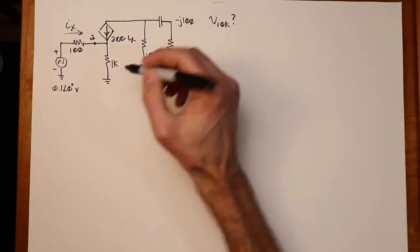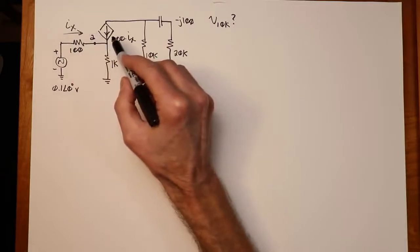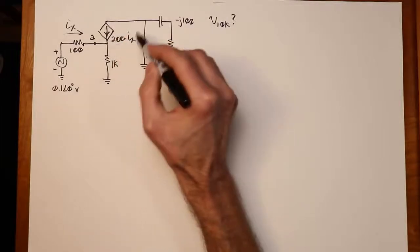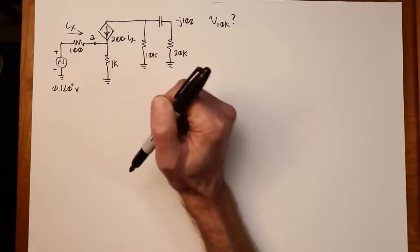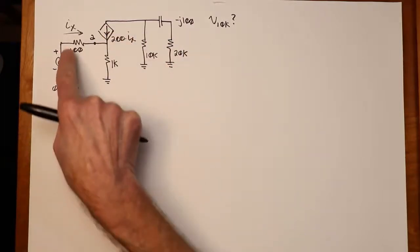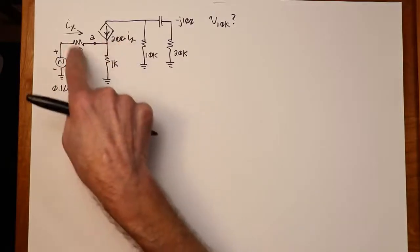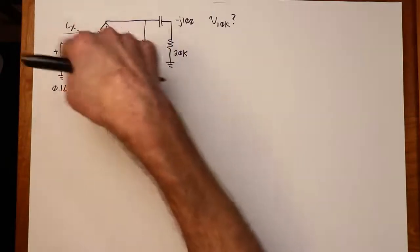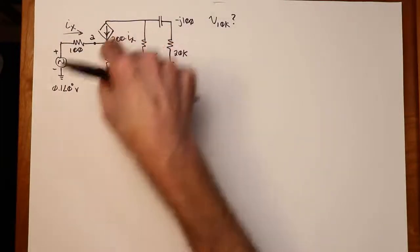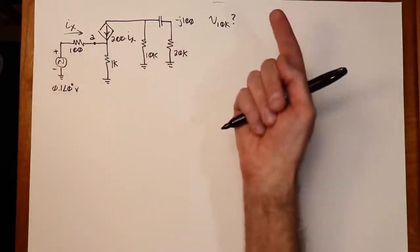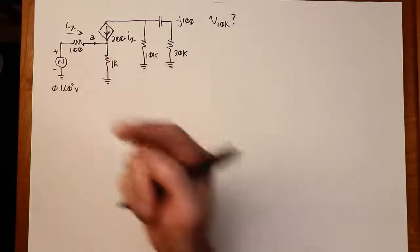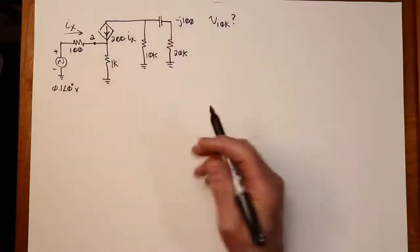The interesting thing here is that IX coming in here on this node A combines with this other dependent current source, the 200 IX, to produce a voltage across the 1k. Now that voltage interacts with the source voltage to produce a drop on the 100 ohm, which of course is what sets up the original IX. So the value that is chosen for IX affects this current, and those two currents together affect this voltage. But that voltage changes this voltage, which changes IX. It's kind of an interesting sort of situation that you have here.